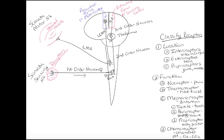In the somatic nervous system, we call this sensory neuron a first-order neuron — the one that brings information into the spinal cord, whether it's pain, temperature changes, vibration, or touch. It's going to come in through a spinal nerve, synapse onto dendrites inside the spinal cord, and the axon goes up to its synaptic terminal in the final relay station: the thalamus.